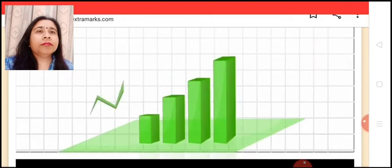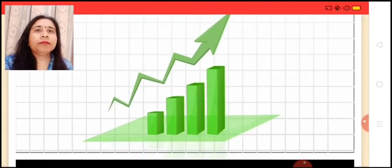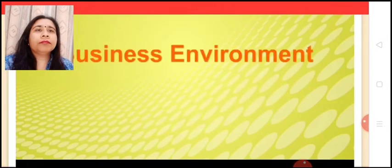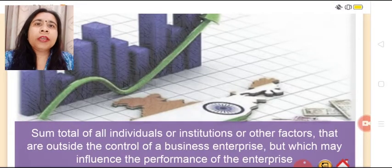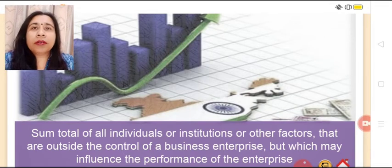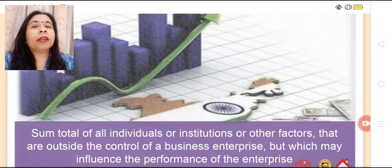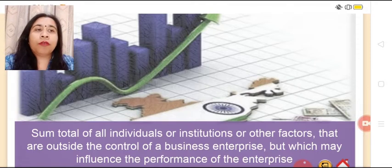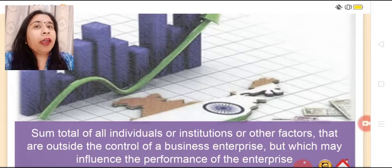This event shows how both the internal and external environment can affect a business. Now let's begin with the unit. Business environment is the sum total of all the individuals, institutions, or other factors that are outside the control of a business enterprise but which may influence the performance of an enterprise.